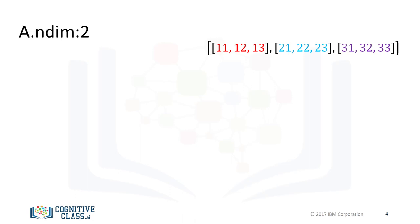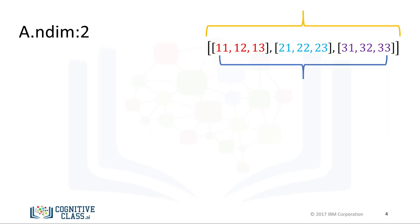We can use the attribute ndim to obtain the number of axes or dimensions, referred to as the rank. The term rank does not refer to the number of linearly independent columns like a matrix. It is useful to think of ndim as the number of nested lists. The first list represents the first dimension. This list contains another set of lists, which represents the second dimension or axes. The number of lists the list contains does not have to do with the dimension, but the shape of the list.